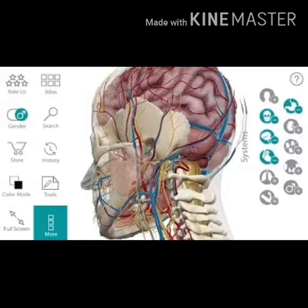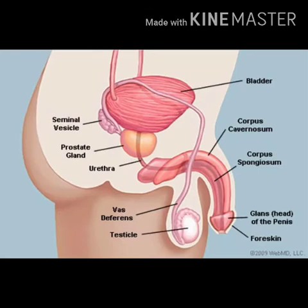Anatomy is the branch of biology concerned with the study of the structure of organisms and their parts. The word 'Anatomy' is made from the Greek word 'anatome', which means dissection or cutting.